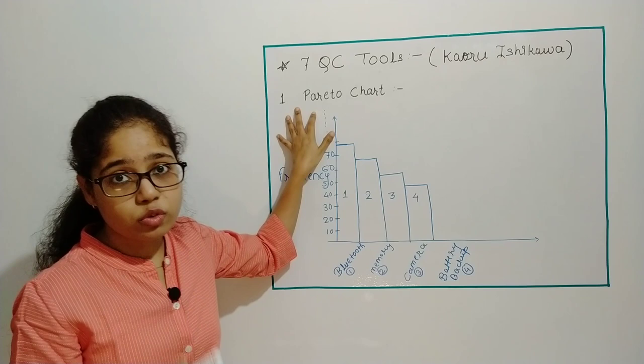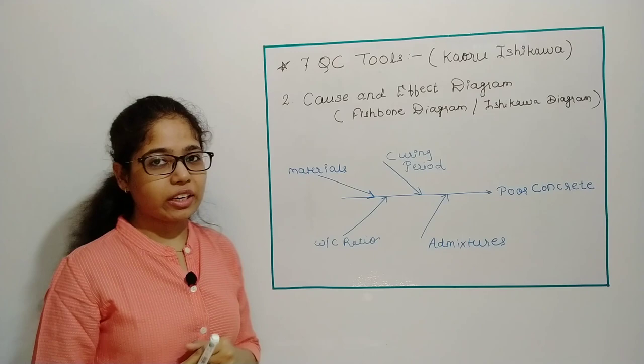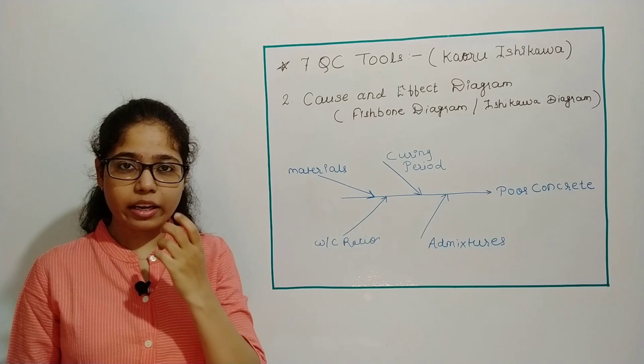This was Pareto Chart with which we can reduce the defects and improve the quality of the product. Now next is our Cause and Effect Diagram. It is also called Fish Bone Diagram and Ishikawa Diagram. Now suppose there is a product which is poor quality.